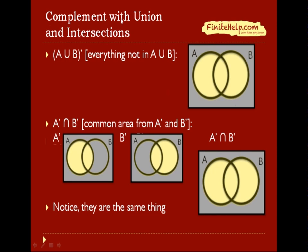Here, we're going to talk about complement with unions and intersection. So first, we're going to do A union B complement, which is everything that's not in A union B. So as you learned, the area here is A union B. So everything that's not in A union B would be this shaded area outside here.